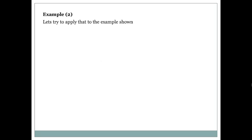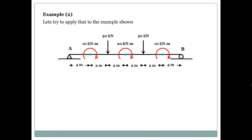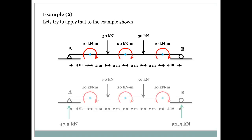Now let's look at the second, slightly more complicated example, which should clarify the whole procedure. The beam may look intimidating but it's actually very simple to solve. We'll skip the reaction-finding portion — you should do that on your own — but the results are: reaction at A equals 47.5 kN and reaction at B equals 52.5 kN.